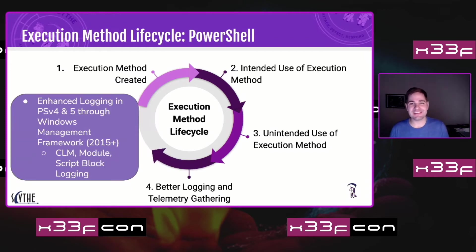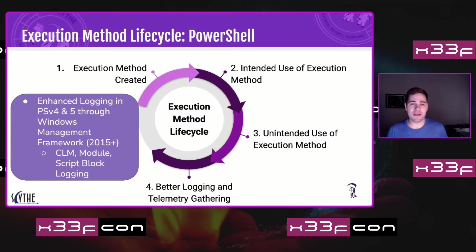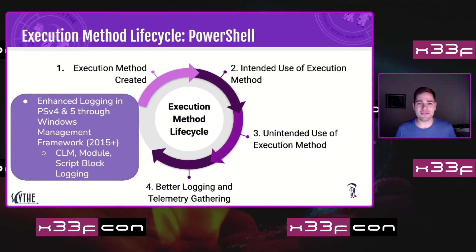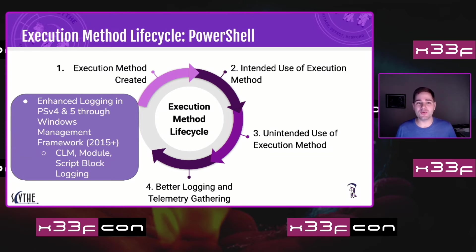With widespread abuse came better logging from the vendor — Microsoft. They added enhanced logging in PowerShell versions 3, 4, and 5 through the Windows Management Framework. The key features you might be familiar with are script block logging, module logging, and constrained language mode. Microsoft released an entire blog post about how PowerShell loves the blue team too, giving defenders the ability to monitor and lock down a lot of PowerShell's features.